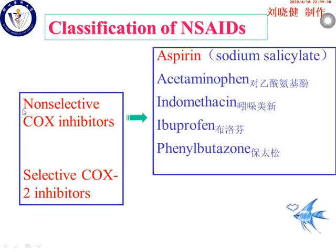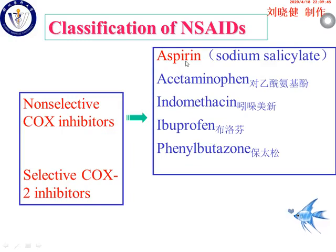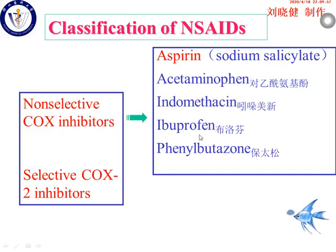Non-selective COX inhibitors include aspirin, acetaminophen, indomethacin, ibuprofen, and phenylbutazone. Among these agents, aspirin is also called sodium salicylate. It is the representative drug in this family, and compared with the other agents, it is the most important. We will study aspirin in detail.